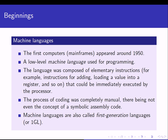The first programming languages were machine languages. The first computers, which were actually mainframes at that time — large, huge computers — were very different from the ones we have today, because they took up so much space and were far less powerful than even small laptops or PCs. The first computers appeared around 1950, and machine language was used for programming.